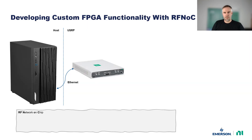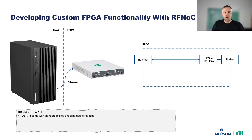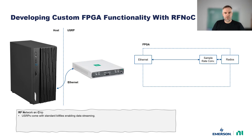Many users start from a setup such as shown here. A host computer is connected to a USRP over Ethernet. A time domain waveform is streamed from the host to the USRP and transmitted over the radio, or vice versa for receiving data. In that setup, all signal generation and analysis is done on the host computer. USRPs come with standard bitfiles that support exactly that functionality: Ethernet connectivity, sample rate conversion, and access to the radio interface. Also available but not shown here is so-called replay functionality to playback or capture waveforms on USRP.